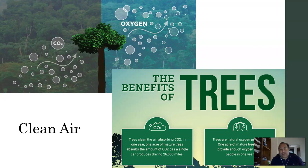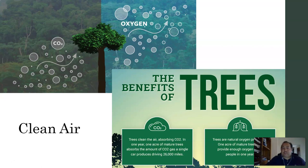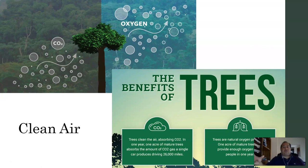Trees take in carbon dioxide and give off oxygen. The grasses and shrubs are doing it too, but trees are so much bigger and can produce so much more oxygen. A fun fact: there are more trees on this planet than there are stars in the Milky Way galaxy — not in the universe, but in our galaxy, there are actually more trees here than stars in the Milky Way.